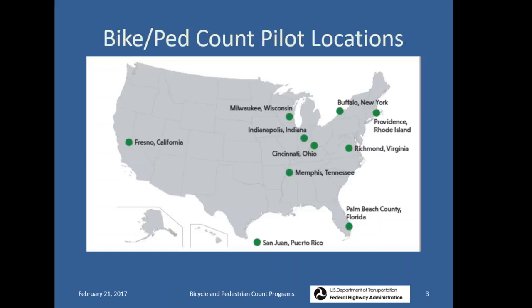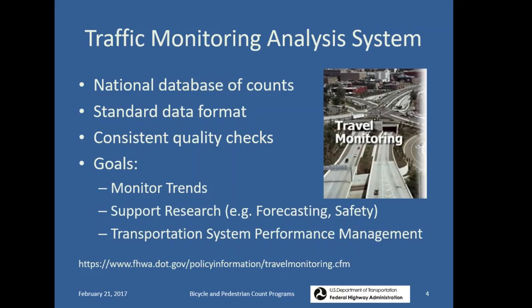The programs we supported were in ten communities across the country — there's a map on screen showing the locations. We tried to achieve geographic spread but there's a lot missing in the middle of the country, and we're contemplating a second round. If you're in one of those blank spots on the map, feel free to drop me an email.